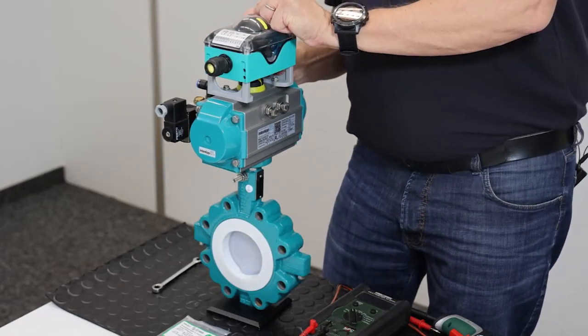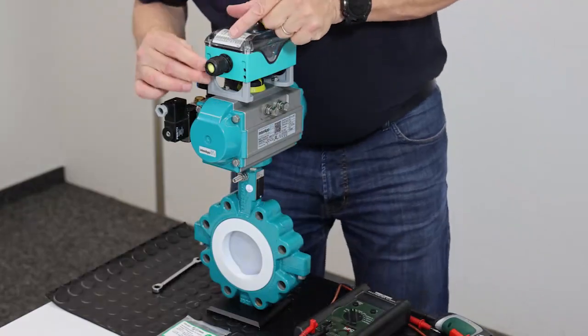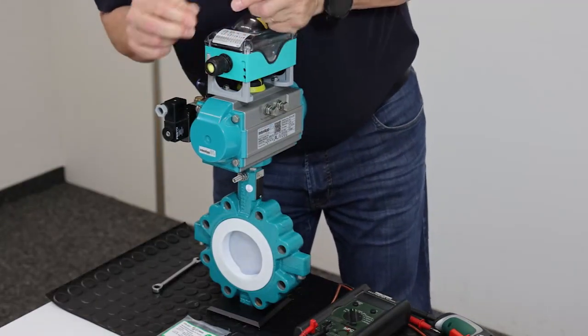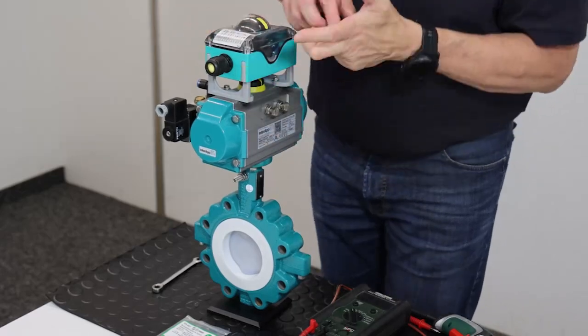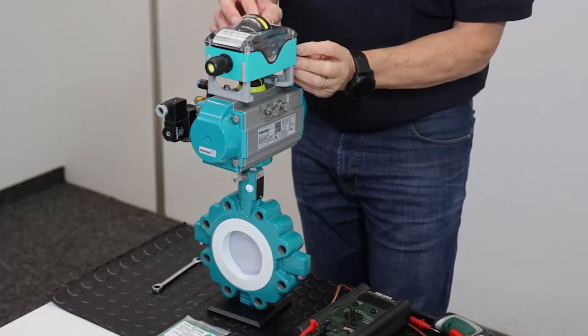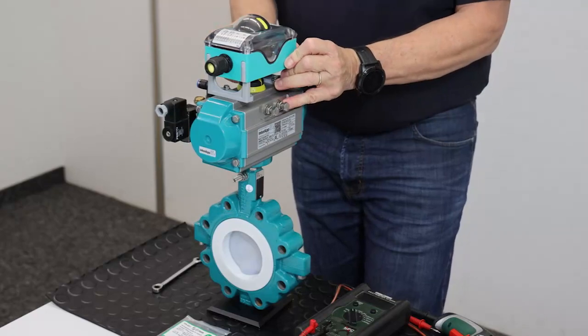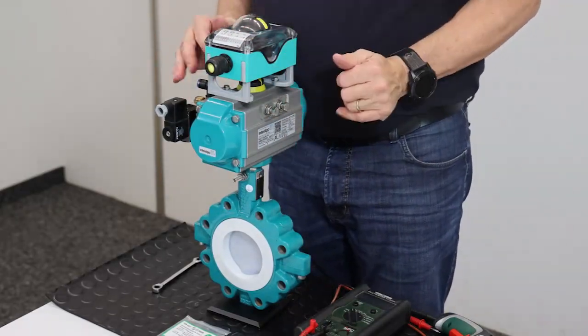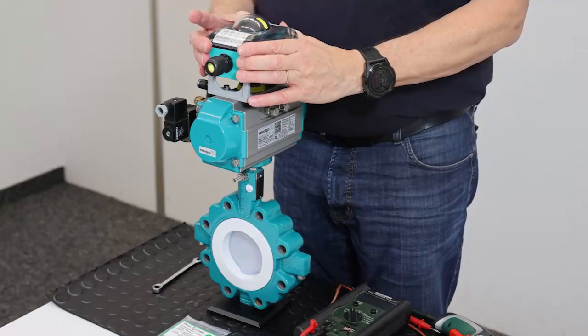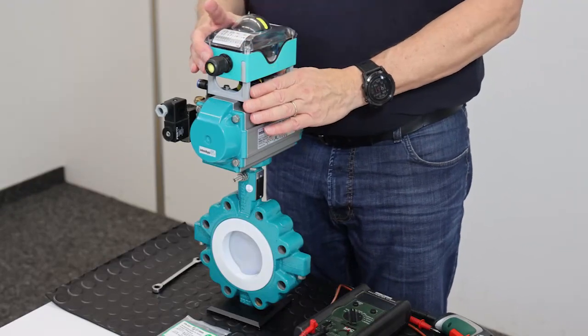Now I fix the retainers of the legs so they cannot move anymore. The box is now mounted on the actuator. Next step will be to adjust the limit switches.